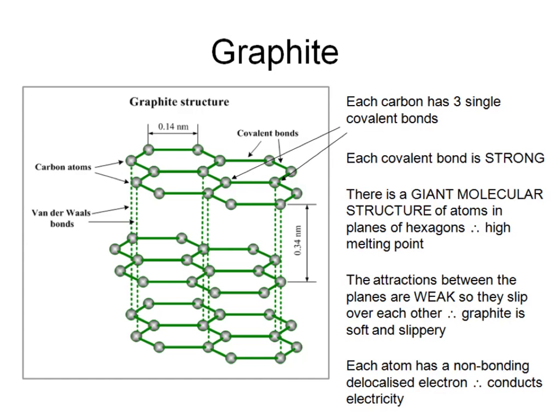In graphite, each carbon is joined to only three other carbon atoms by covalent bonds, which means each carbon atom has one of its four electrons spare and not involved in bonding. Each of these electrons is a delocalised electron — not fixed to any particular carbon atom — so there is a sea of mobile, free electrons which can carry electricity through the graphite structure. So graphite conducts electricity.